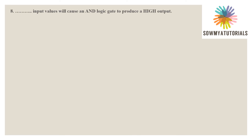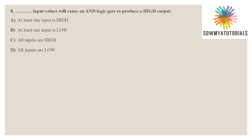Eighth question: which input values will cause the AND logic gate to produce a high output? When the AND logic gate produces a high value, both operands must be 1 and the result will be 1. Option A: at least one input is high — wrong. Option B: at least one input is low — also wrong. Option C: all inputs are high — this is right. Option D: all inputs are low — also wrong. The correct answer is option C: all inputs are high.